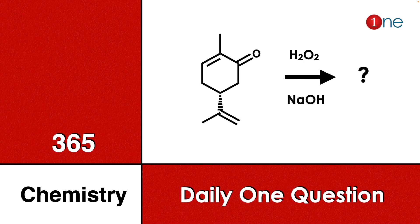Welcome to One Chemistry. This is the 365 Chemistry Series — daily one question for you. Here, cyclohexanone has an alpha-beta unsaturated carbonyl, with an isopropyl group below the plane and a methyl group on the plane.